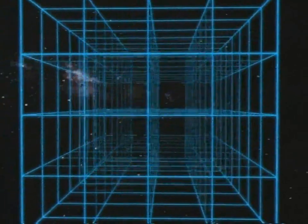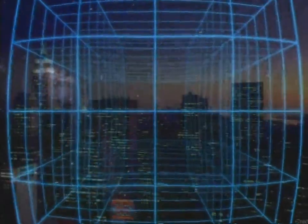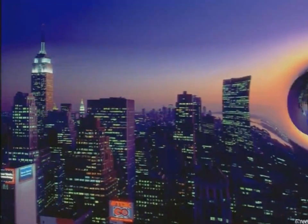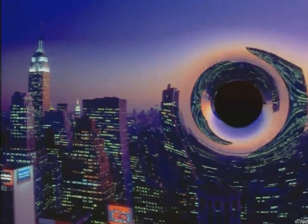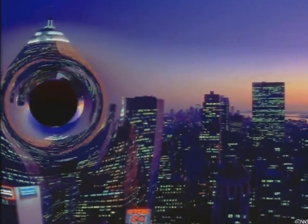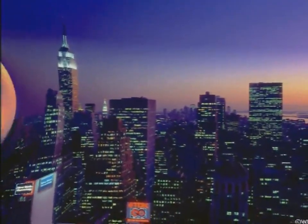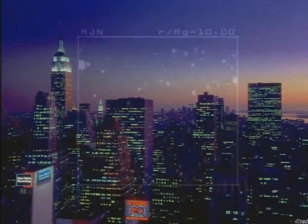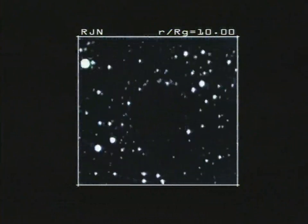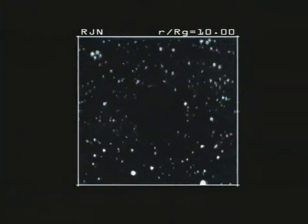In our everyday world, nothing can warp space to this extreme. But imagine a mini black hole in front of a familiar scene. Although nothing in the background actually moves, buildings appear to bend. Out in space, a black hole would distort the pattern of distant stars in the same way.